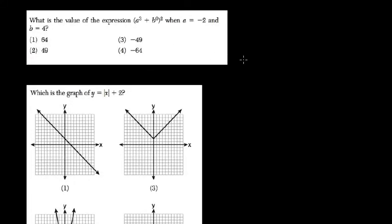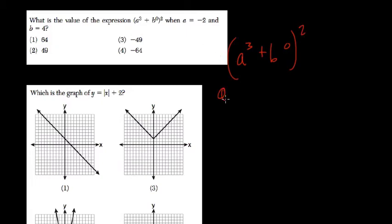What is the value of the expression a to the third power plus b to the zero power, squared, when a equals negative 2 and b equals 4?